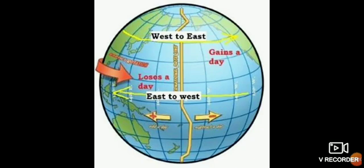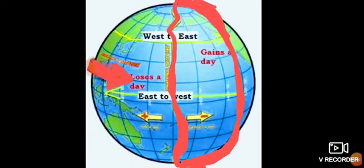Now you know that the earth rotates around the sun, but do you know that it rotates in the direction of west to east? Yes, the earth rotates from west to east. Can you see that red color arrow in that picture? It is moving in that direction — the earth is rotating towards the sun from west to east. Where does the sun rise? It rises in the east. So that means the sun is towards the east.